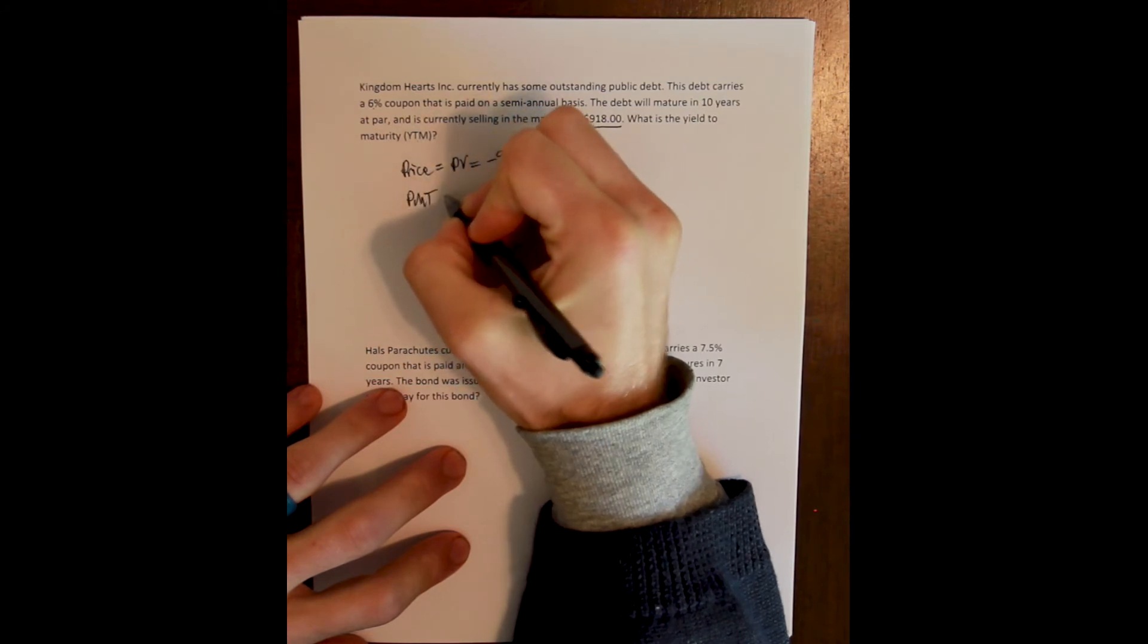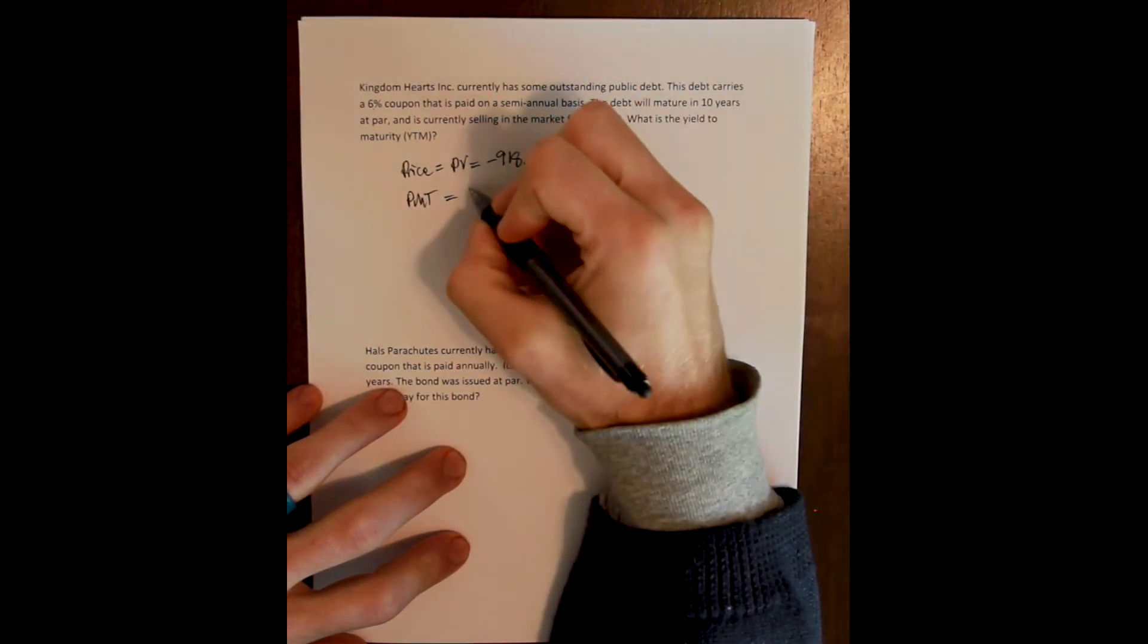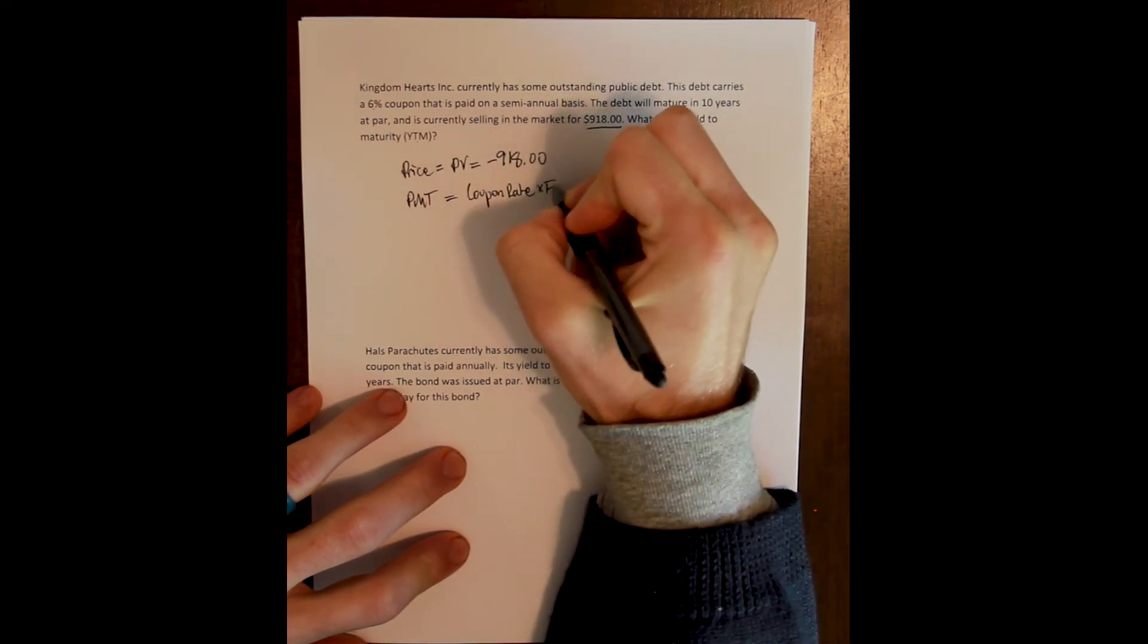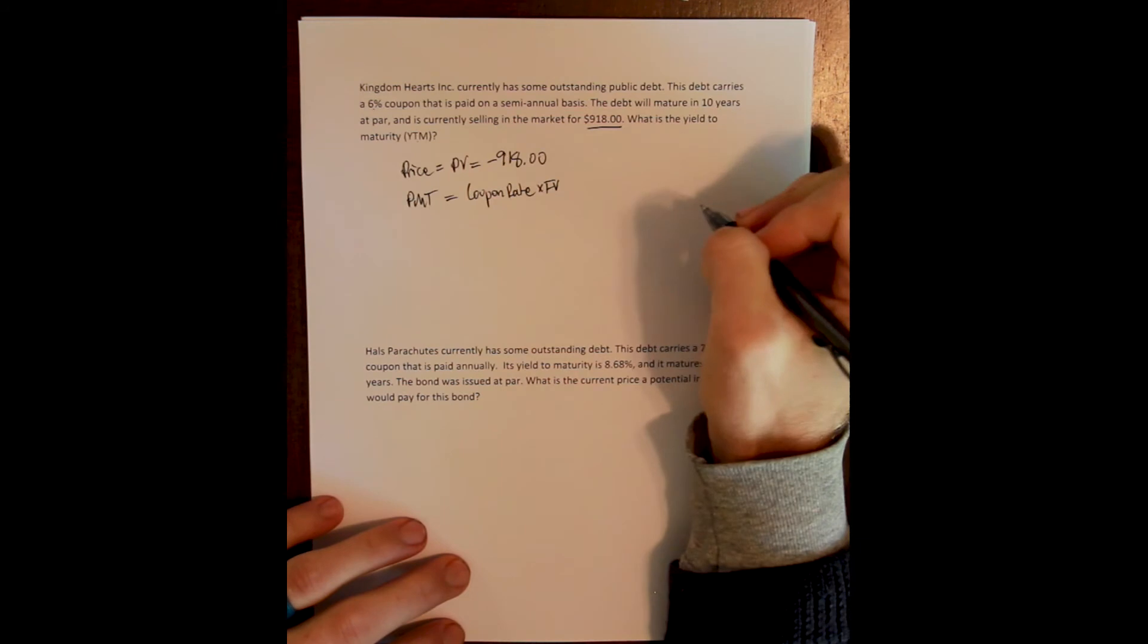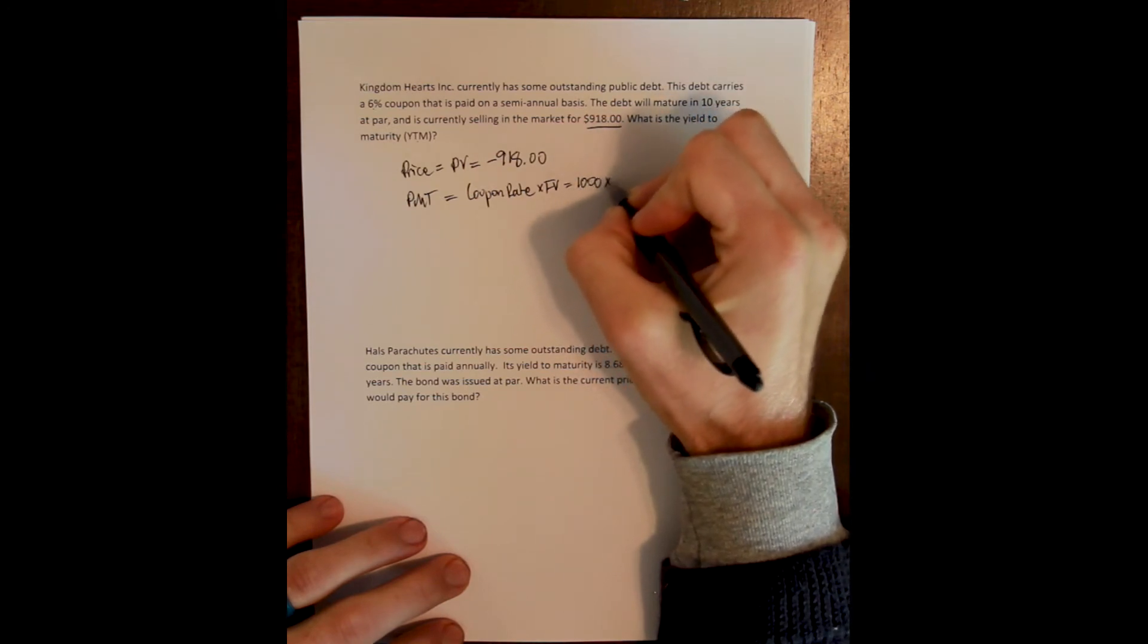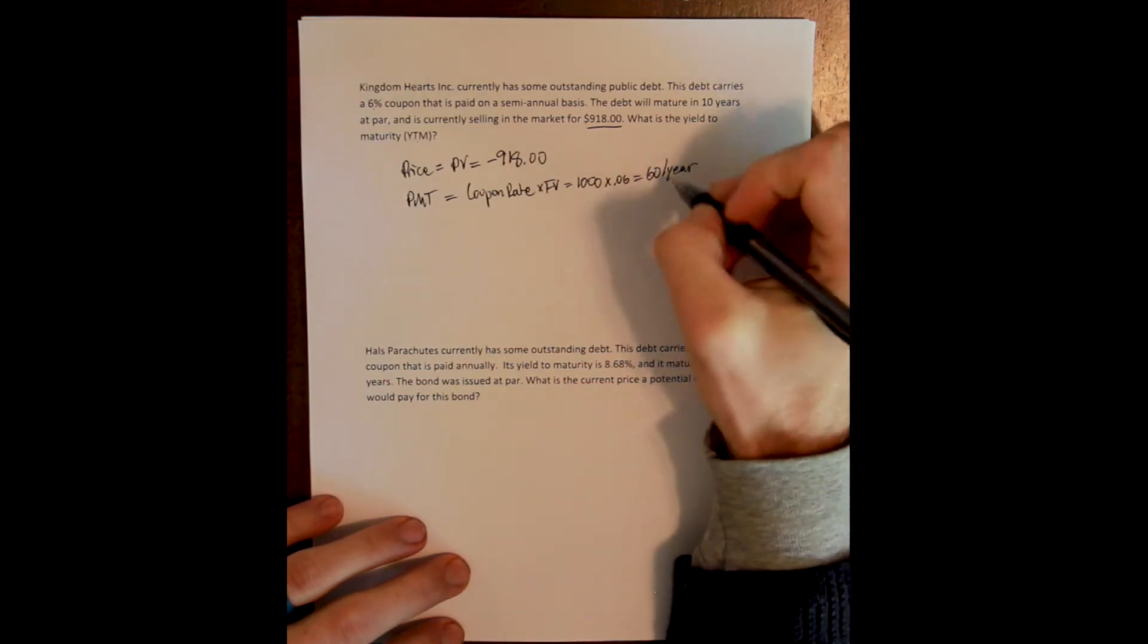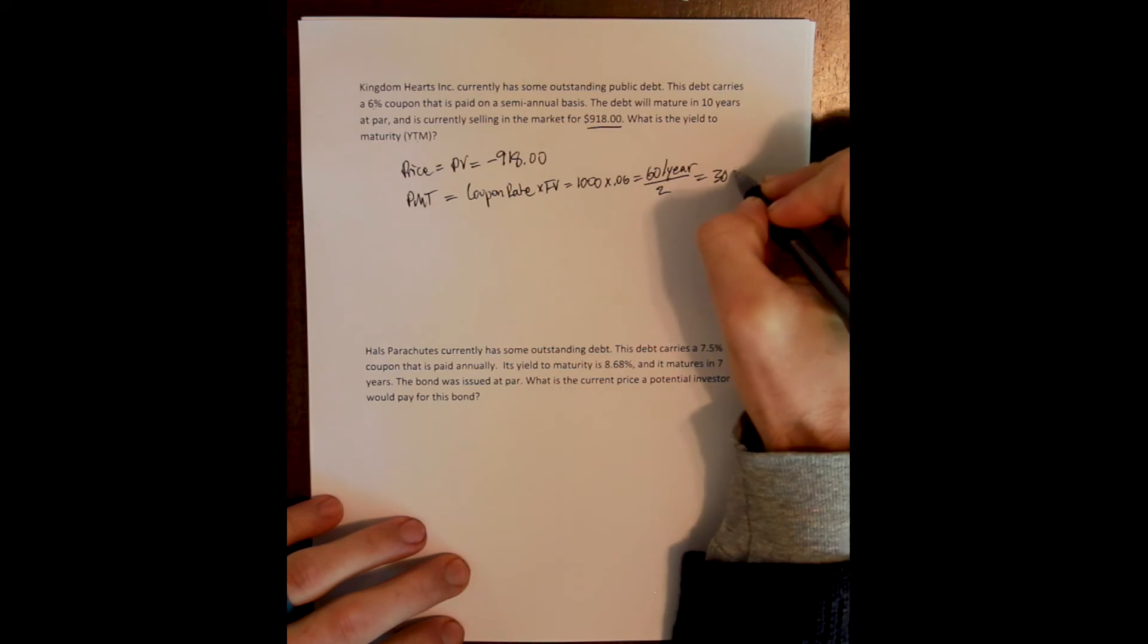The payment is our coupon payment, of course, and our coupon payment is the coupon rate times the face value. And so that is going to be $1,000 times 6%, which is $60 per year. But we're paying semi-annually, so that is $30 every half year.